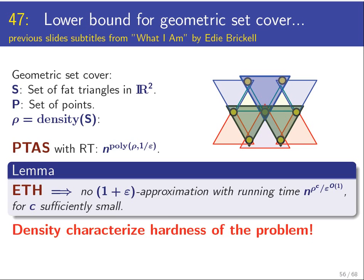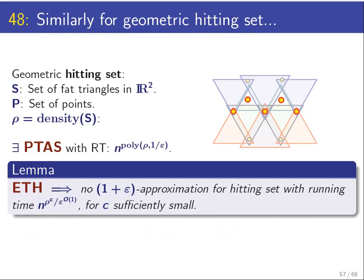We can get the same result for geometric hitting set. In geometric hitting set I give you a set of regions, say triangles, and I want to pick a subset of a given point set such that the selected points stab all the regions. You want this hitting set to be as small as possible. As before, we get EPTAS with running time n to some polynomial in the density, and ETH tells us that we cannot do better than n to the density to power of some constant. Again, we get characterization as far as density.